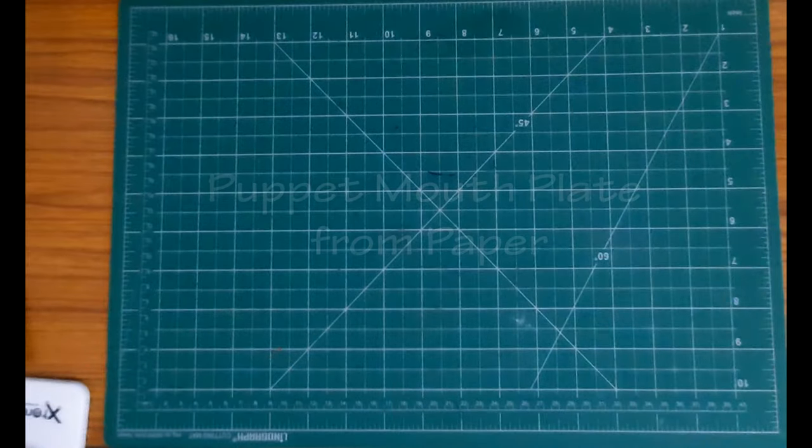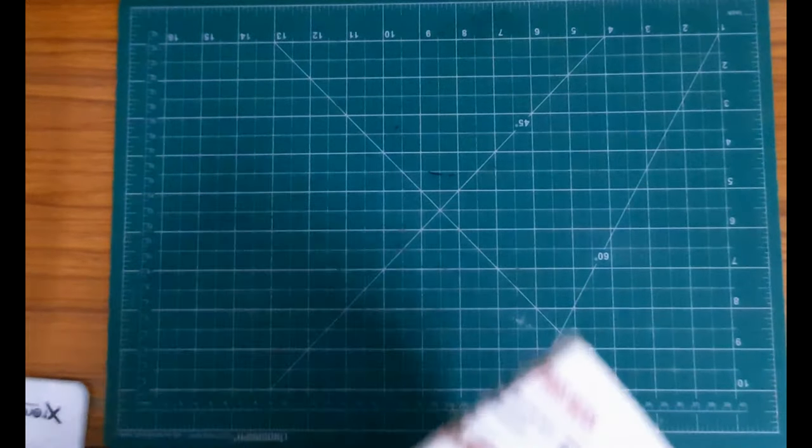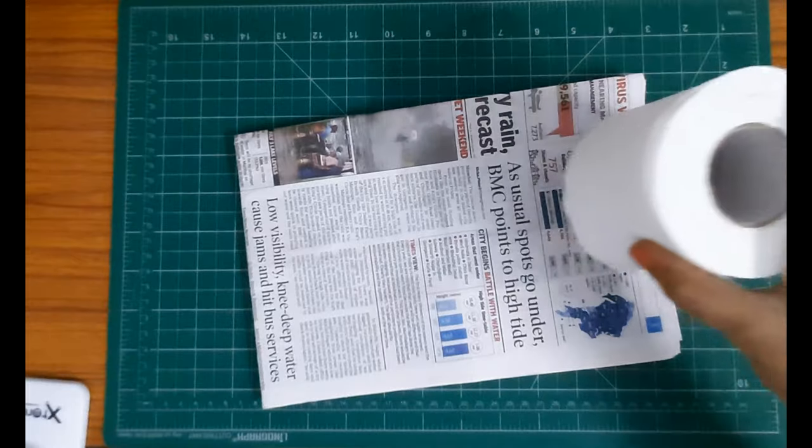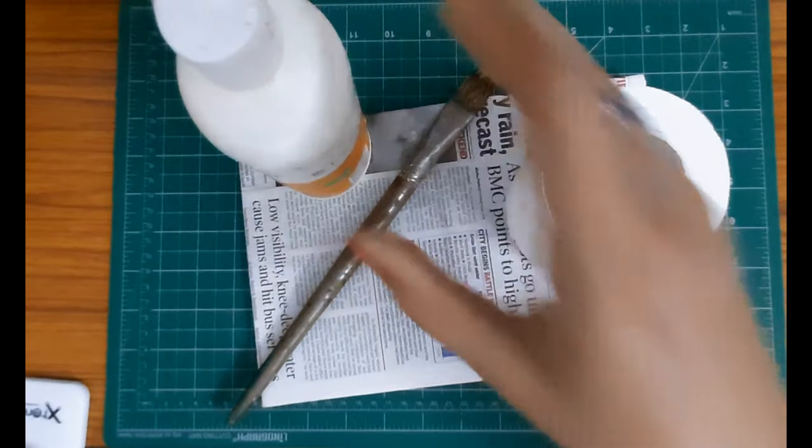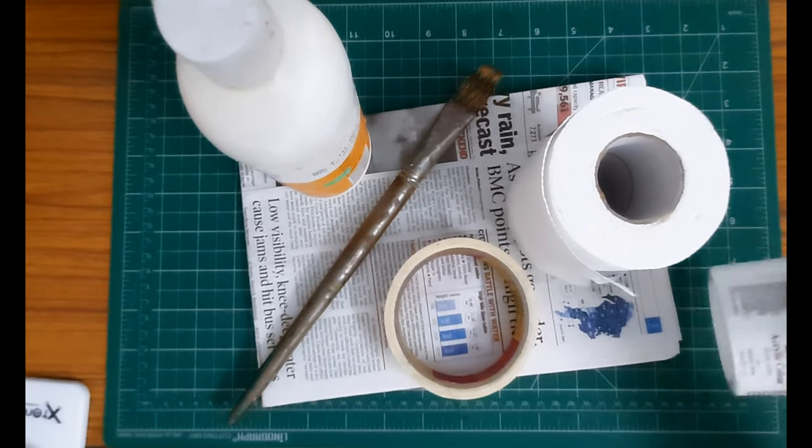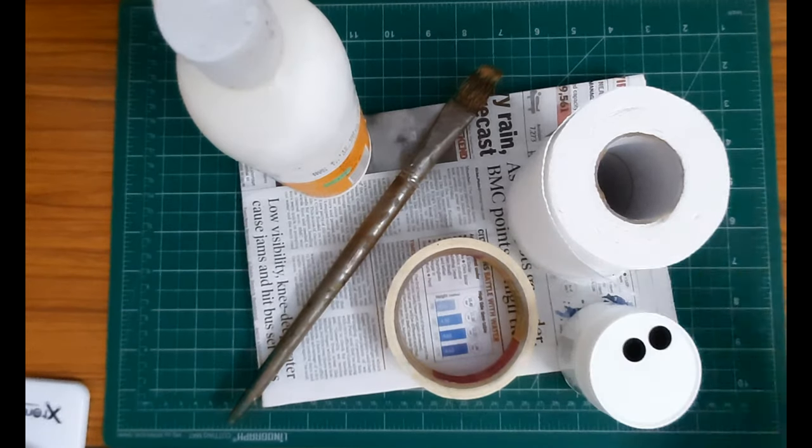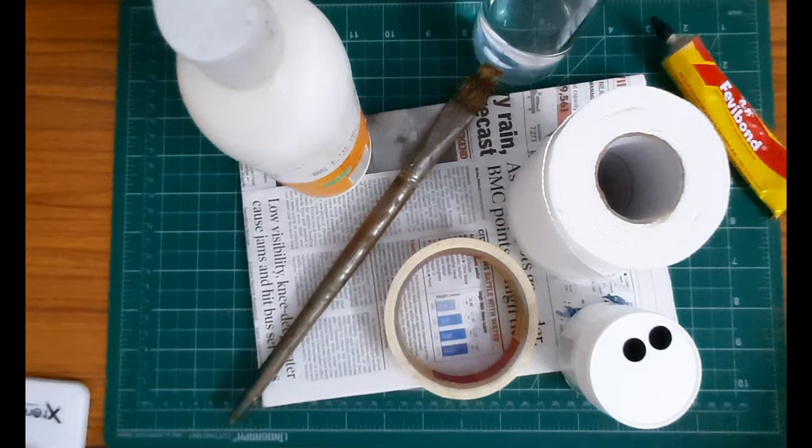Paper mouth plate - yes, you heard it right! A paper mouth plate, and to make it we just need the humble newspaper. Let's see the materials that go into it: a newspaper, a toilet roll, a paintbrush, Fevicol, paper tape, white acrylic paint, Fevibond or any rubber glue, a glass of water, and an empty bowl.